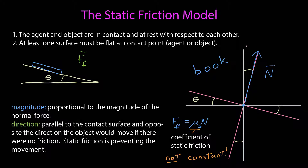The direction of the frictional force is parallel to the surface, but this time we say it is directed opposite the direction the object would move if there were no friction. So if we look at this system and imagine there were no friction, the book would slide down the incline. Therefore, the static frictional force opposes the motion that would happen if there were no friction — static friction is essentially preventing the movement from happening.